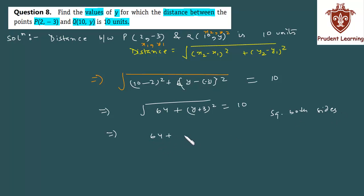we have 64 plus (y + 3) whole square. On the LHS, the root will cancel when you square. And RHS, 10 squared is 100. Which implies that taking 64 to RHS, 100 minus 64 is 36, and LHS has (y + 3) whole square.